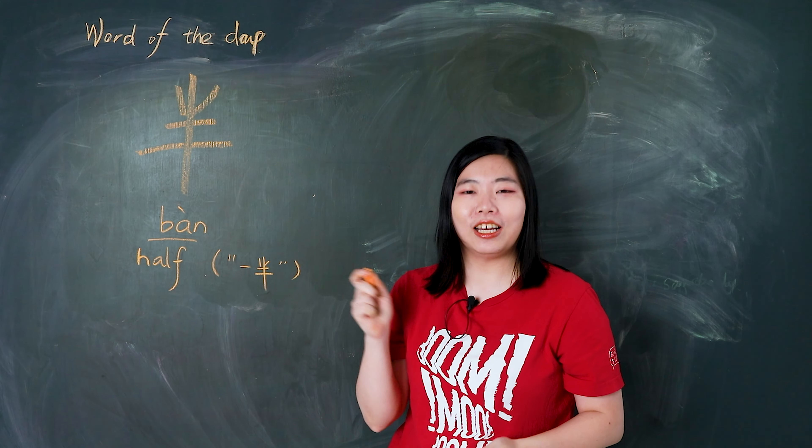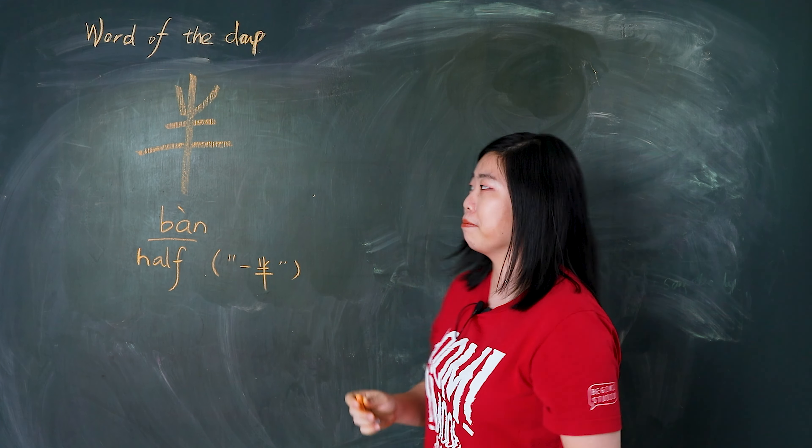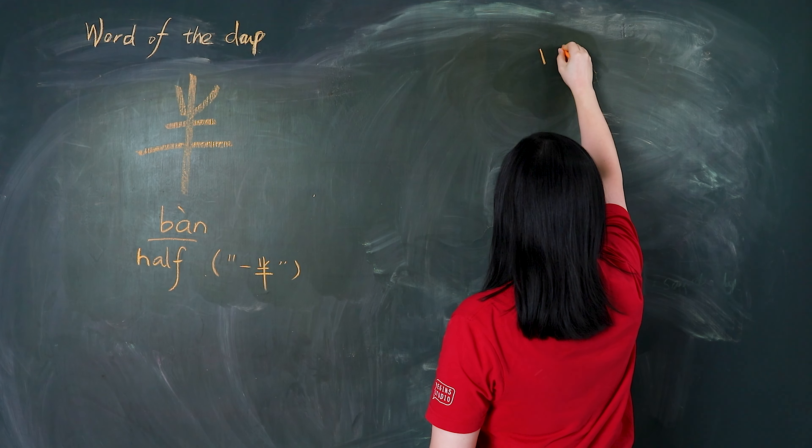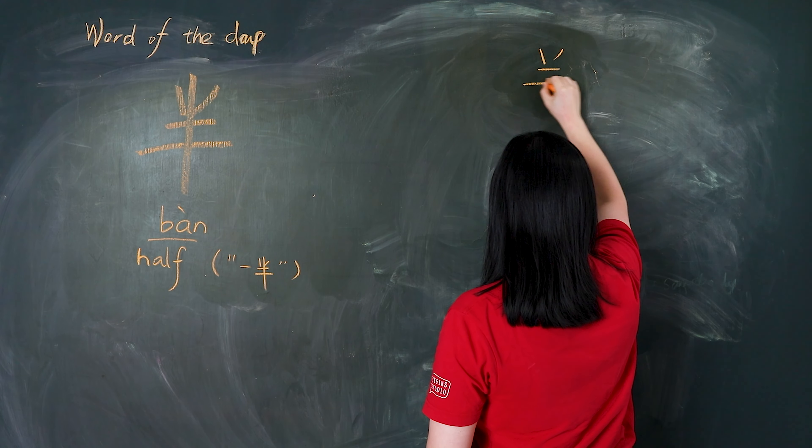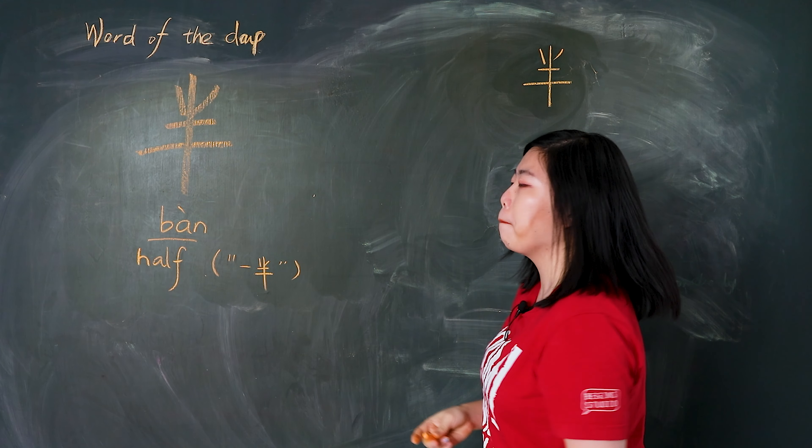Okay, let's write it. 我们一起写. 点 撇 横 横 横 竖. 半.